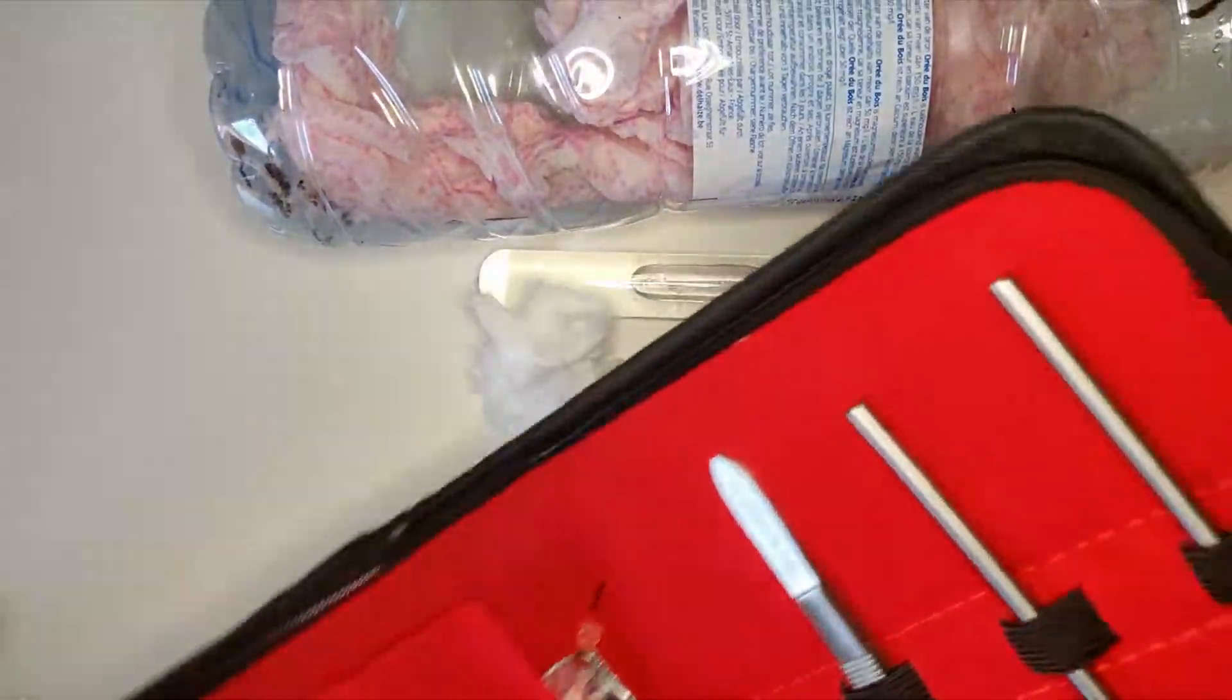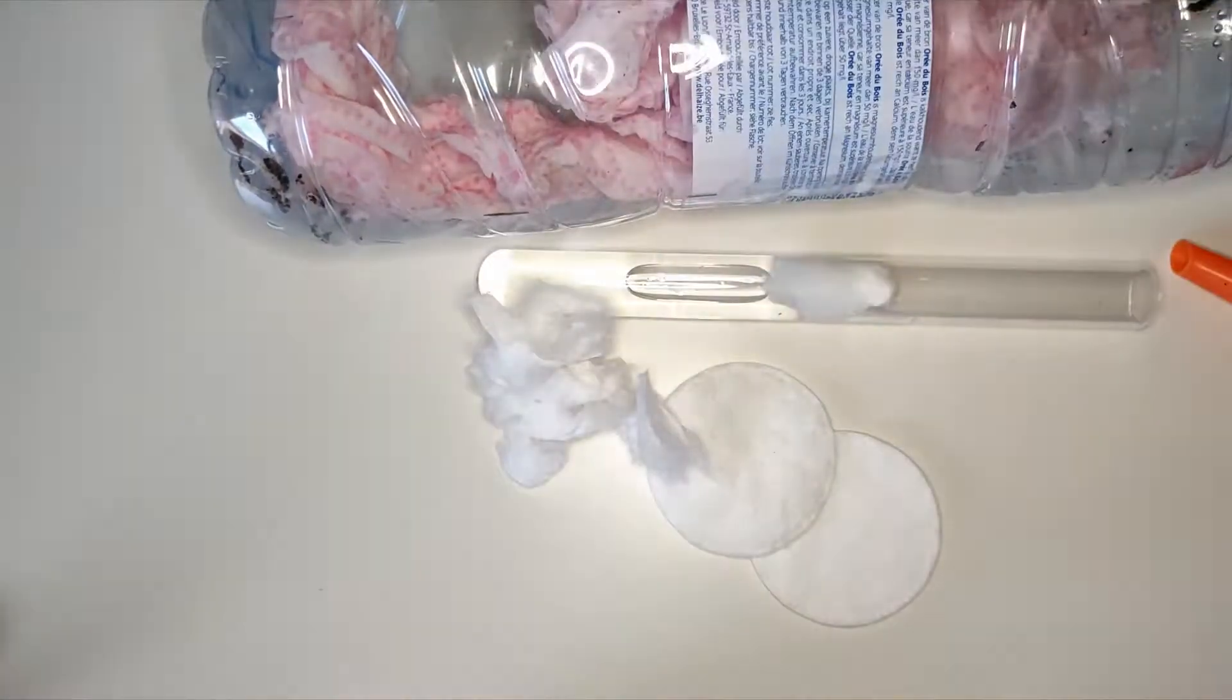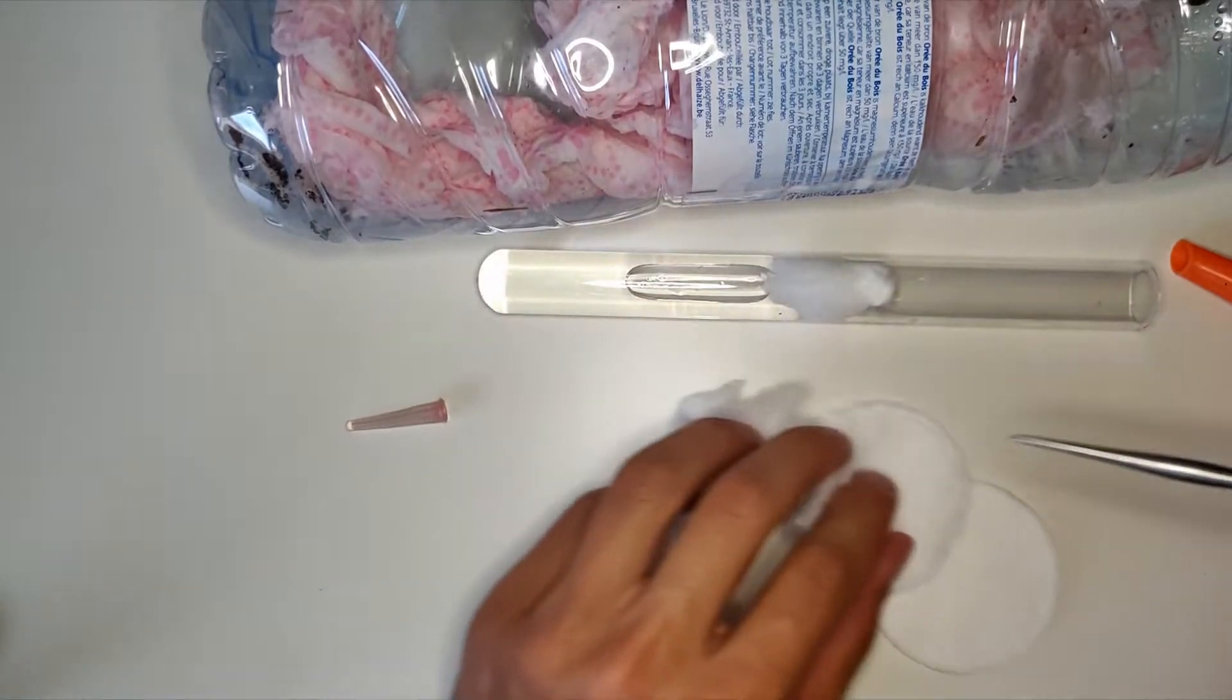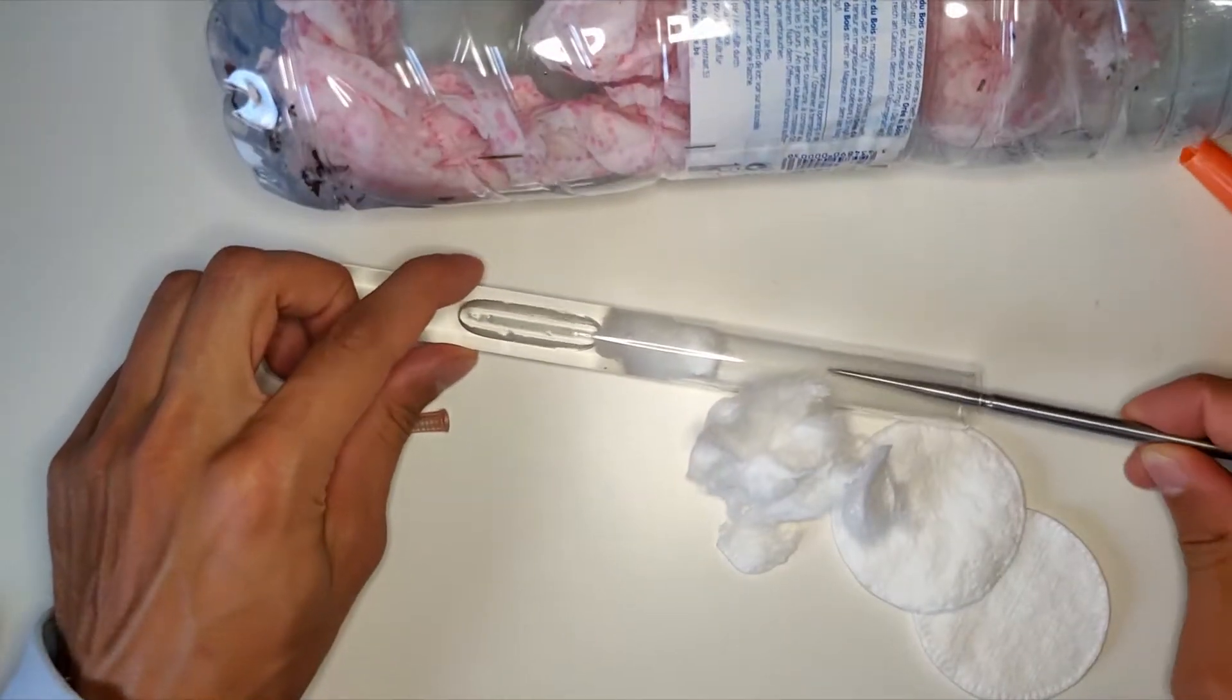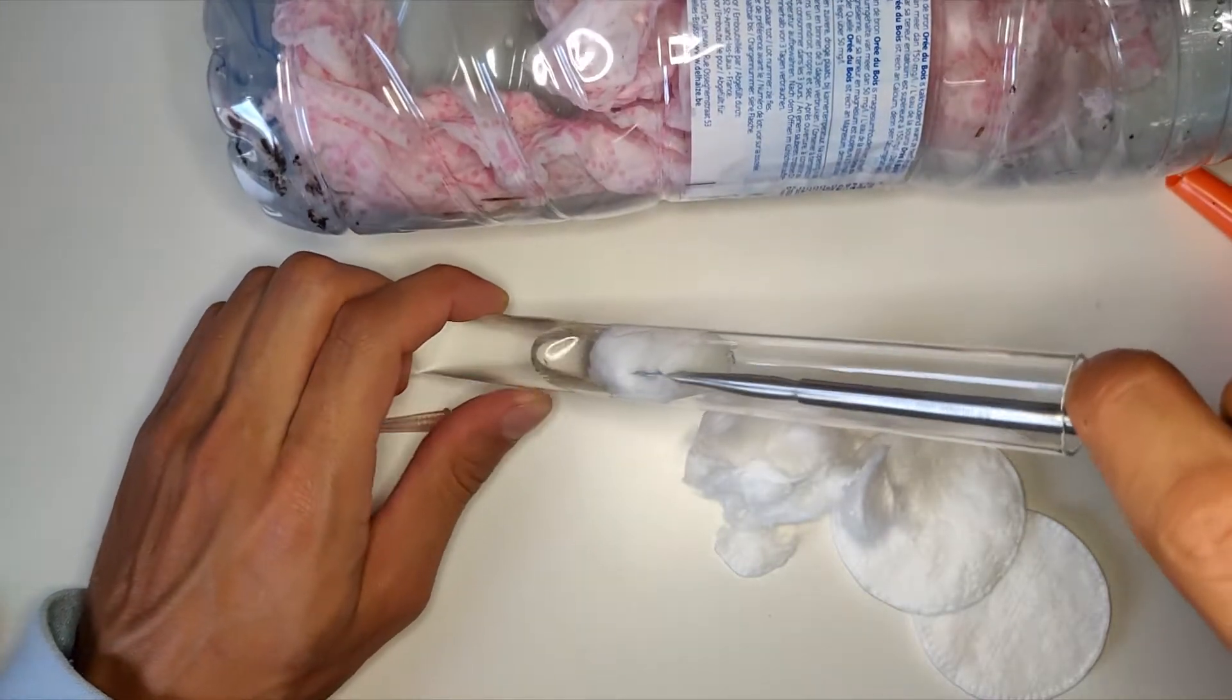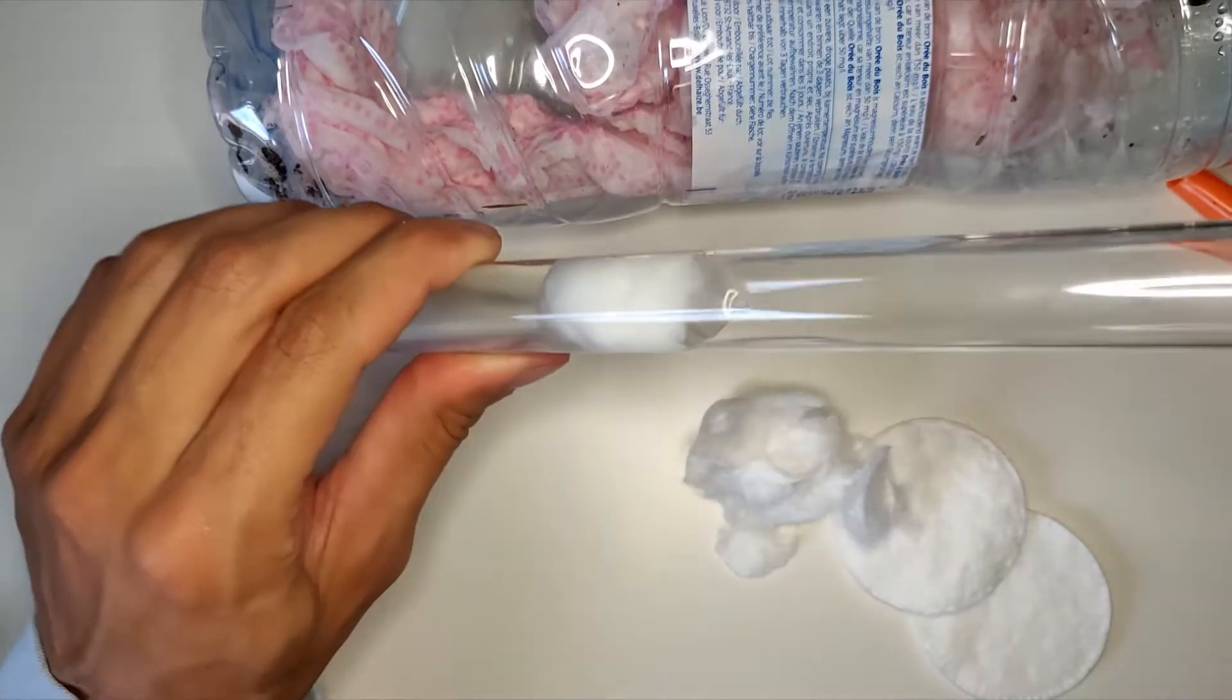If I have something thin and pointy, which I do have - I have my dissection kit here - so let's take one of these and remove the air bubble. Voila, no air bubble.